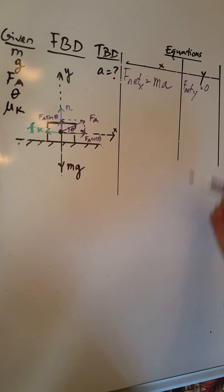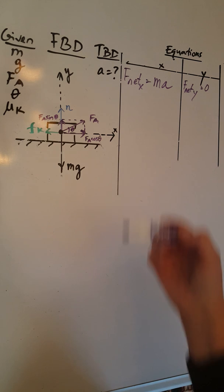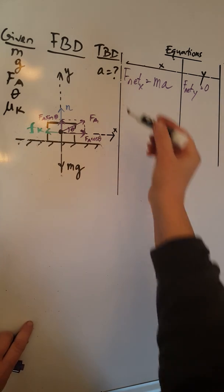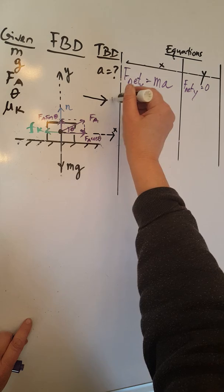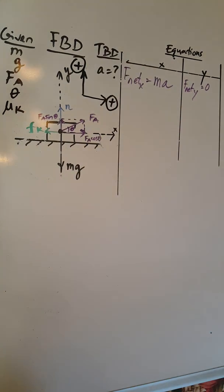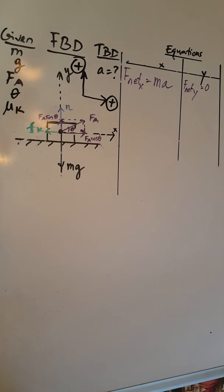Now in order to continue developing these equations, we need to remember that F net is the vector sum of all the forces. Therefore, we need to consider these vectors with their directions. So I am going to pick my positive directions and show it clearly over here: to the right for X and upward for Y. Knowing this, we are ready to put together the equations with the forces and their directions.